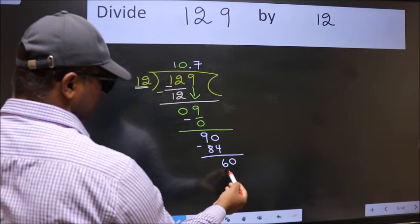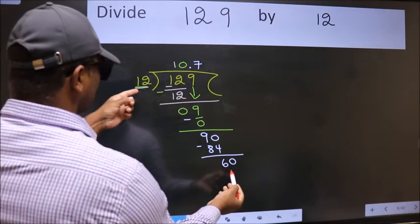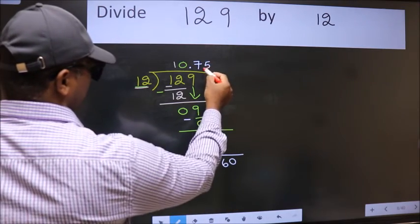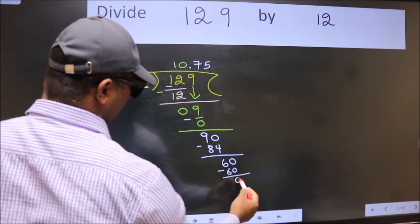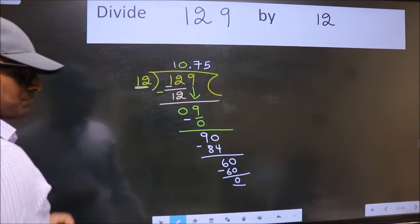6 smaller than 12. We already have the decimal, so directly take 0. So 60, when do we get 60 in 12 table? 12 times 5, 60. Now we subtract, we get 0.